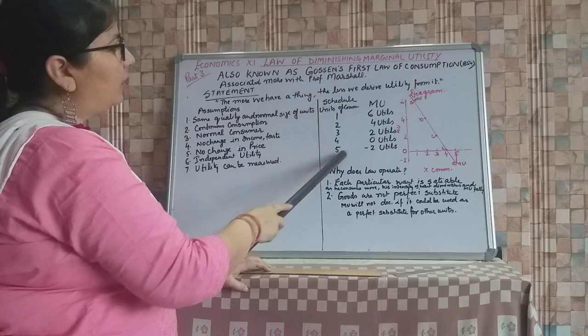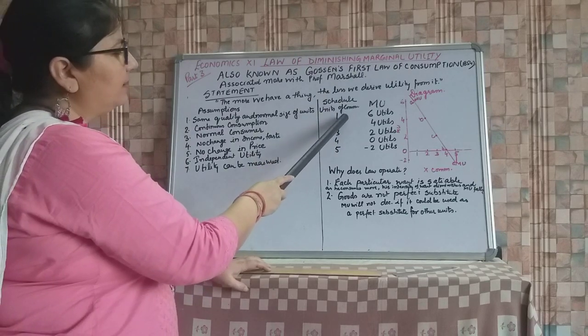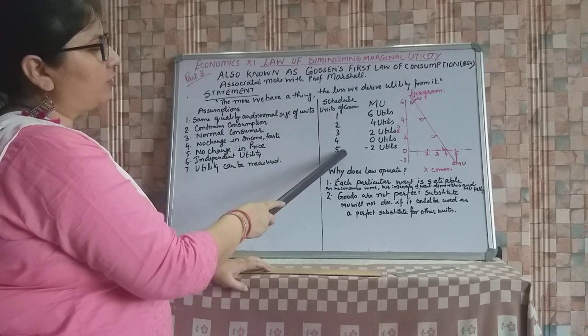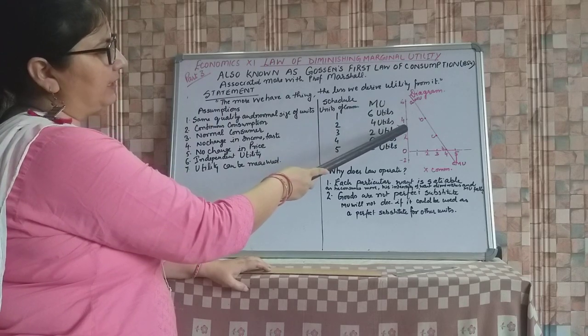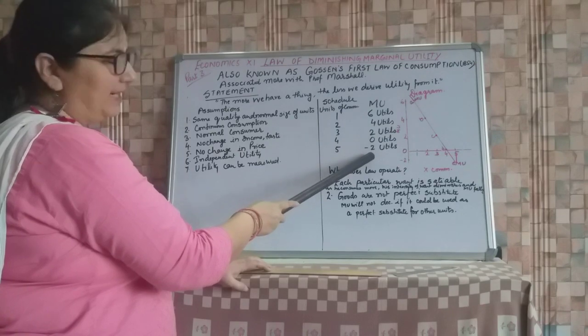Now for this we can make a schedule and we are assuming we are consuming five units of commodities. Then MU will be, that is also being hypothetical, 6, 4, 2, 0, minus 2.